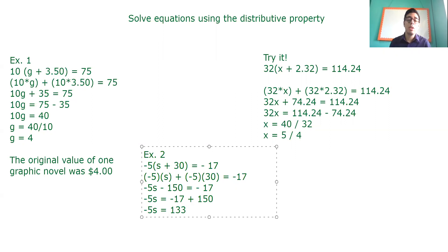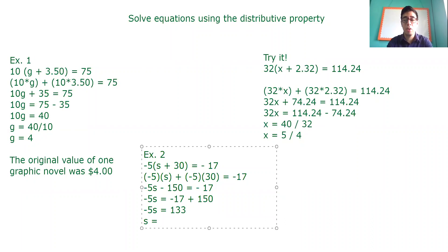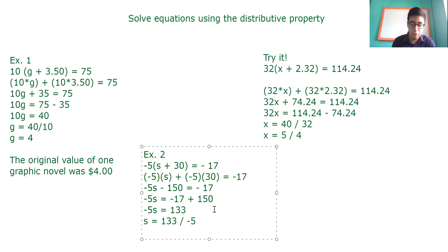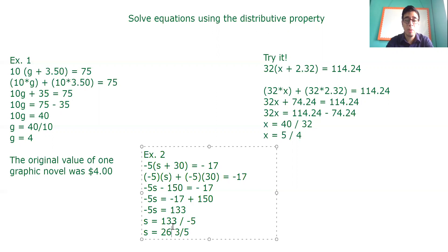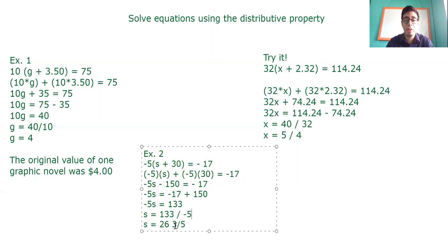So what is going to happen with the negative 5 that is multiplying the variable s? I want the s to be alone, so I pass it to division. s is going to equal 133 divided by negative 5. The result of this division is an improper fraction, so we convert it into a mixed fraction — 26 and 3 fifths. The sign is going to be negative, because you have positive and negative. So the answer is negative 26 and 3 fifths.